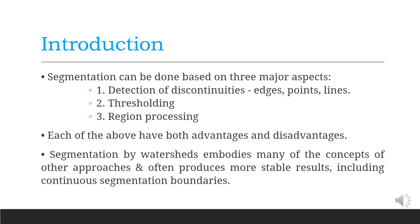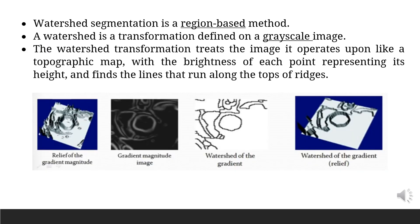This is based on visualizing an image in 3D. Normally, it is done by spatial coordinates x and y versus grayscale, usually denoted by f or g. Watershed segmentation is a region-based method.